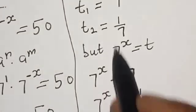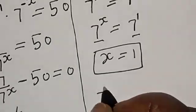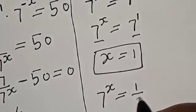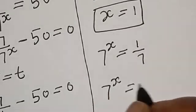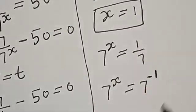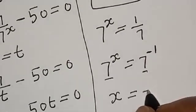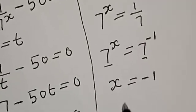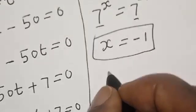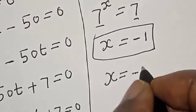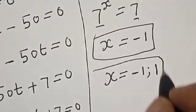Also, at t2 equal to 1 over 7, we have 7 raised to the power s is equal to 1 over 7, which is 7 raised to the power minus 1. Since they have the same base, s is equal to minus 1. That is the second value of s. Therefore, the values of s are minus 1 and 1. That is our final answer.